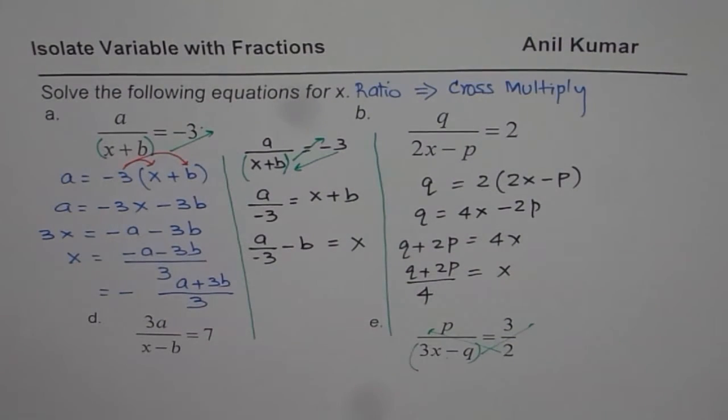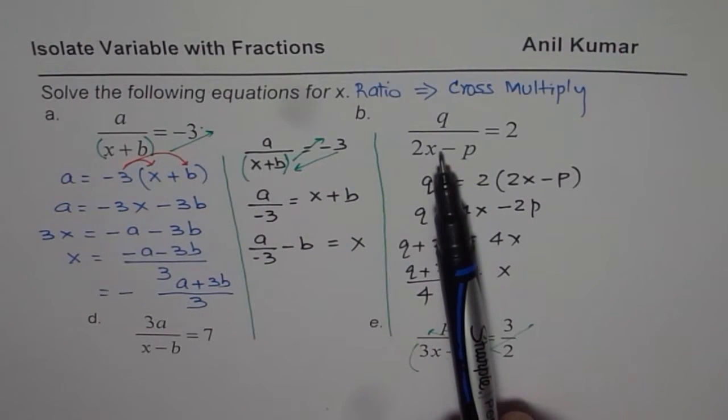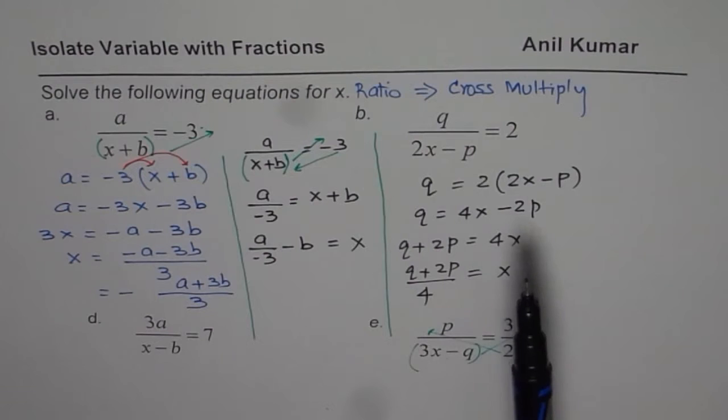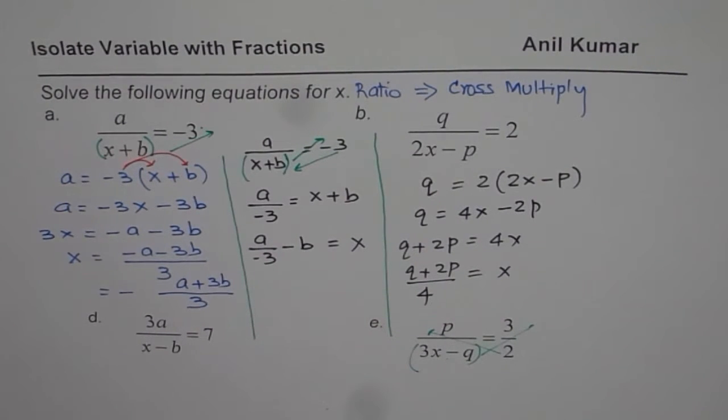So you could do like this or you could adopt this method of bringing 2 here first and then isolating. But in this particular question, that is a better approach. At times, you may find one approach to be better than the other. I hope that really helps. This indeed is probably the best approach to follow most of the time.